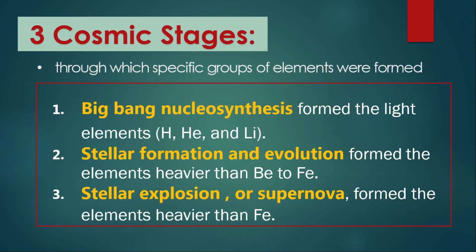There are three cosmic stages through which specific groups of elements were formed. The first is Big Bang Nucleosynthesis, which formed the light elements: hydrogen, helium, and lithium.